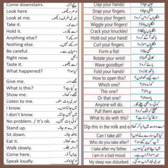Which one — koonsa wala. This one — ye wala. Or that one — ya wo wala. Anyone will do — kui sa bhi chalega. Pull them apart — khench kar alag karo. What to do with this — isay kya karna hai.